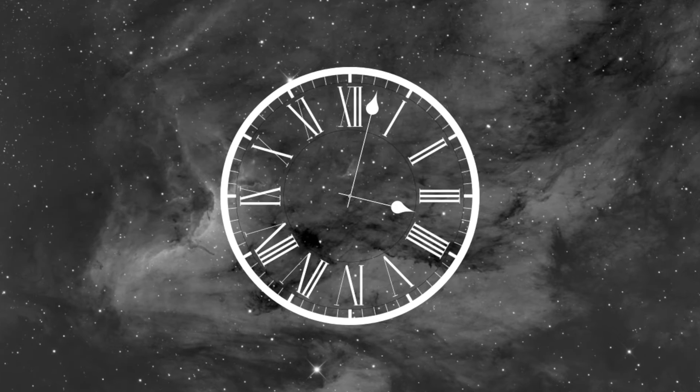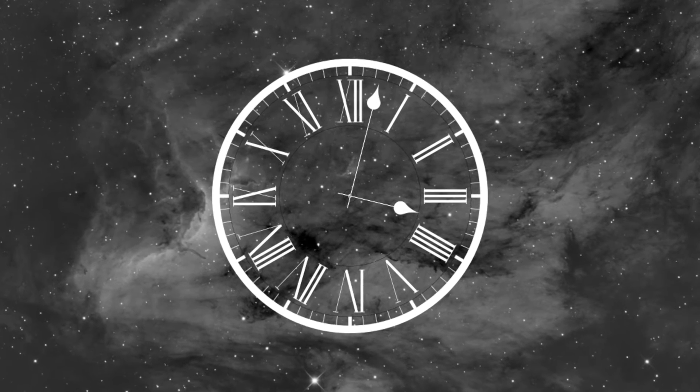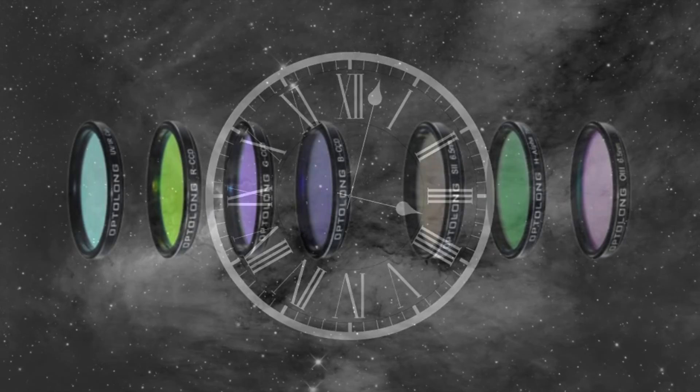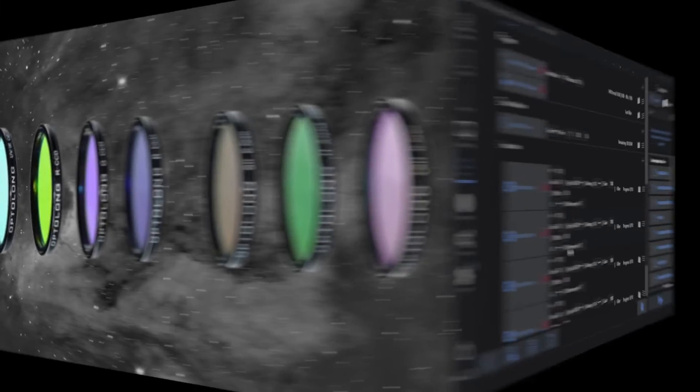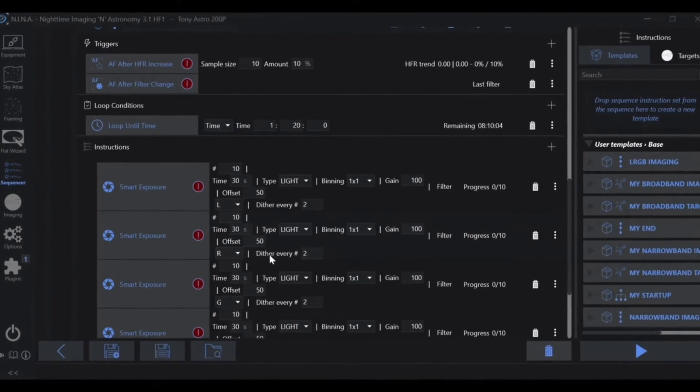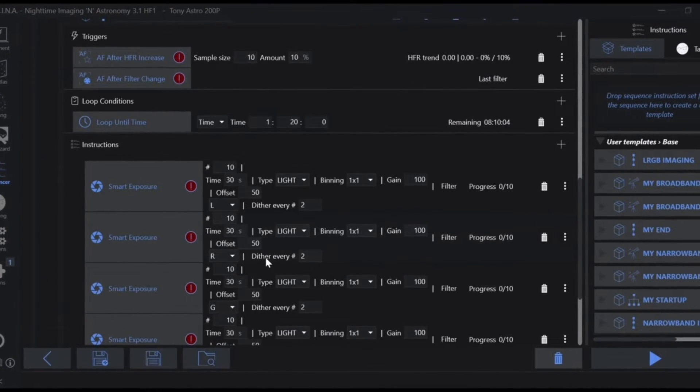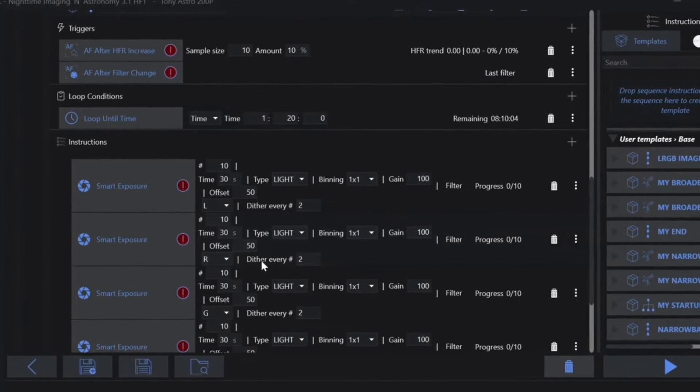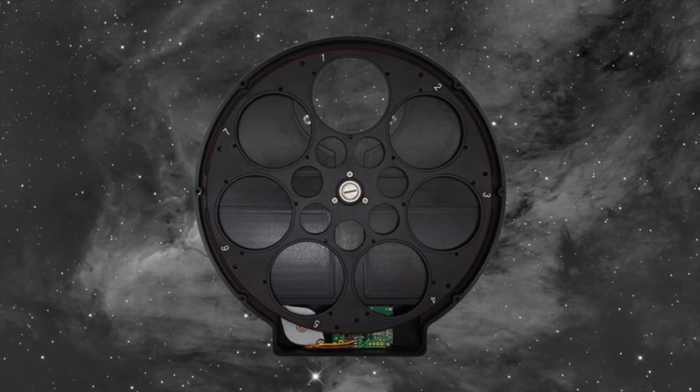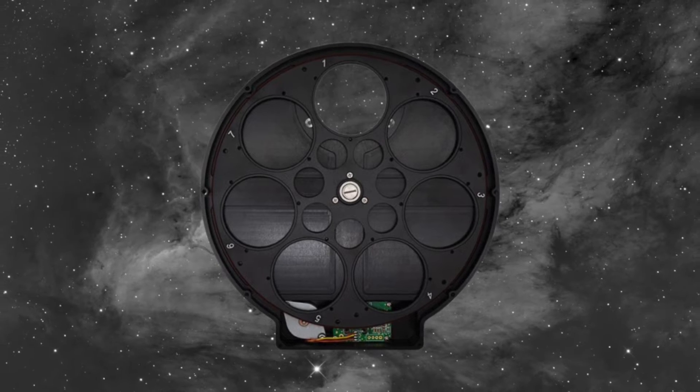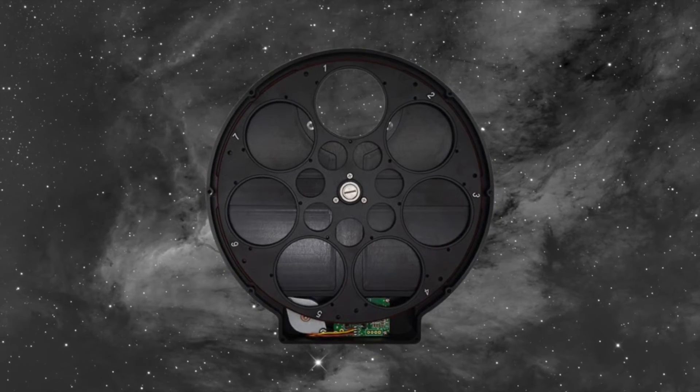Monochrome cameras require more equipment and time, as you'll need to take multiple exposures through different filters and then combine them in post-processing. This also means more complex imaging sequences in order to capture the different color channels you need versus a one-shot color camera. It's not required, but definitely a good idea to have an electronic filter wheel that can automatically change the filters as needed during an imaging sequence.